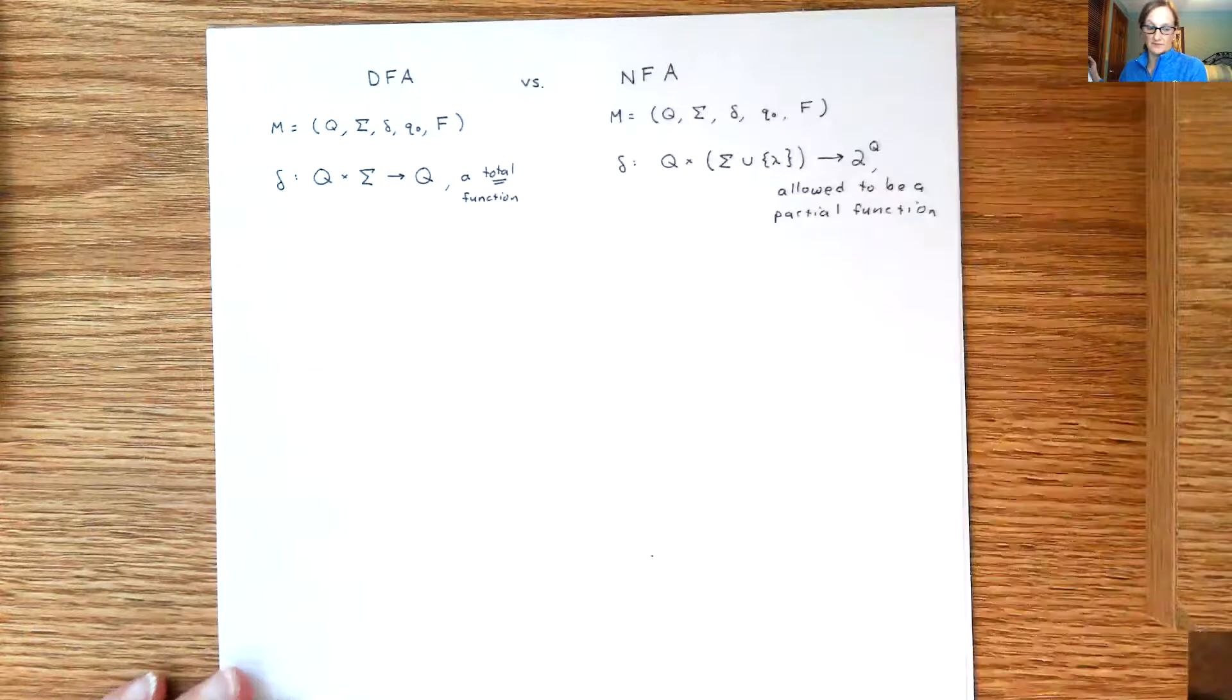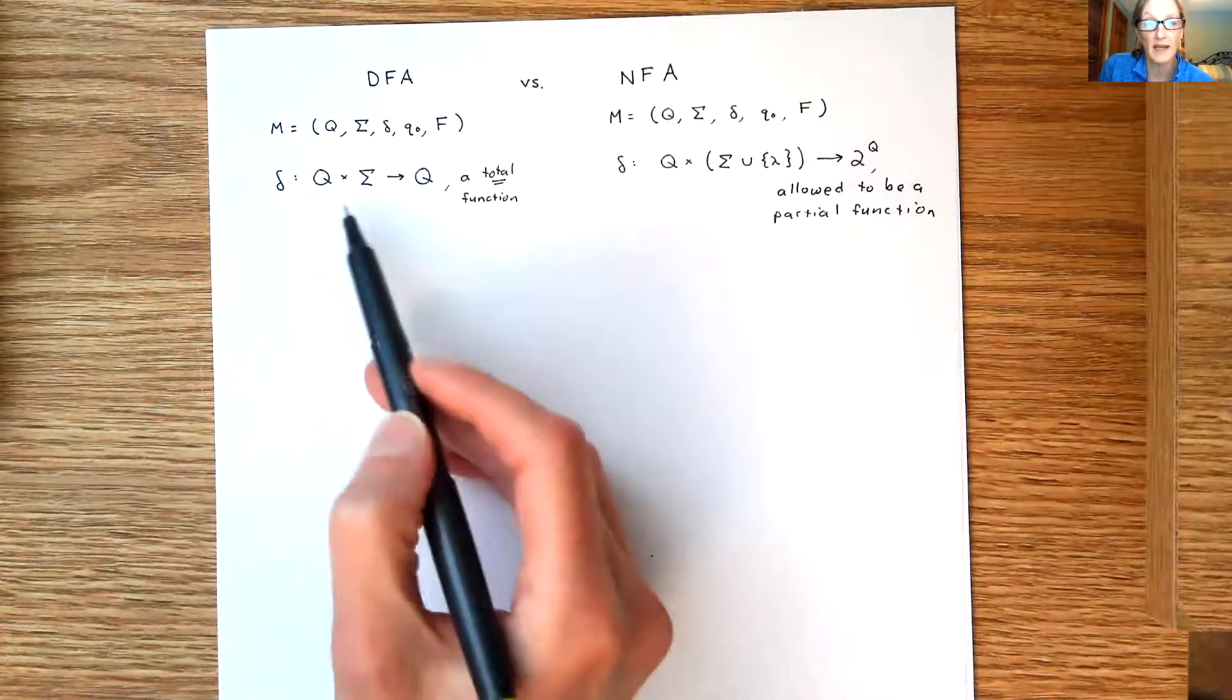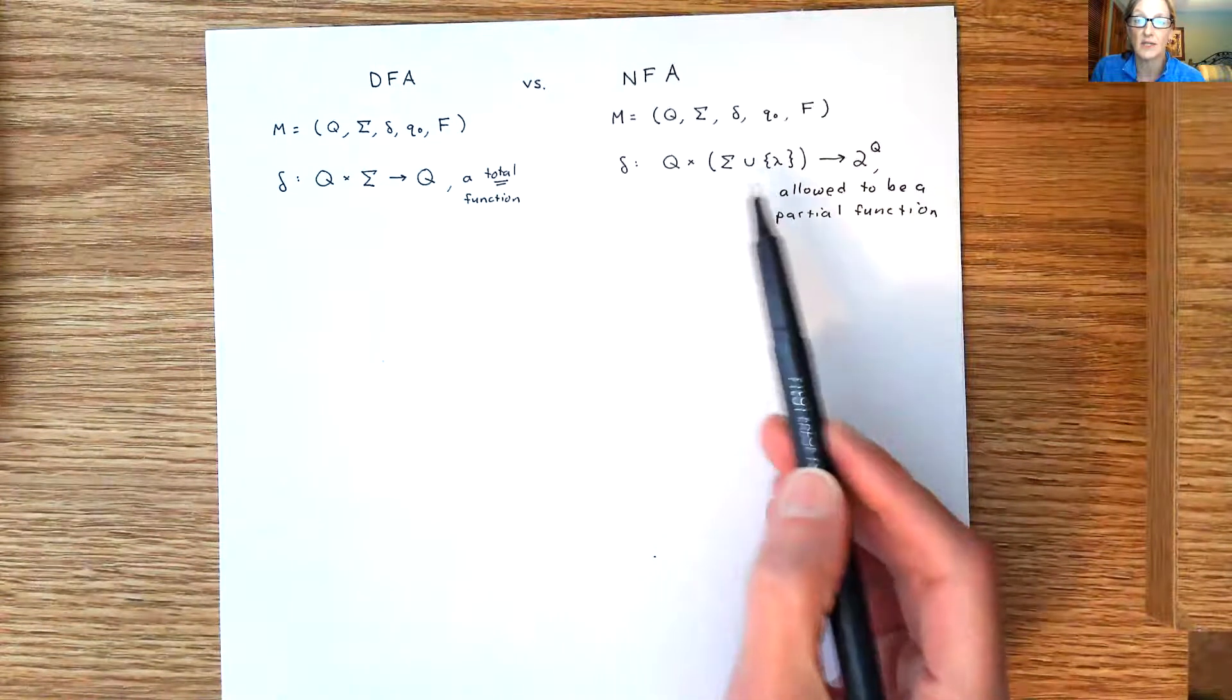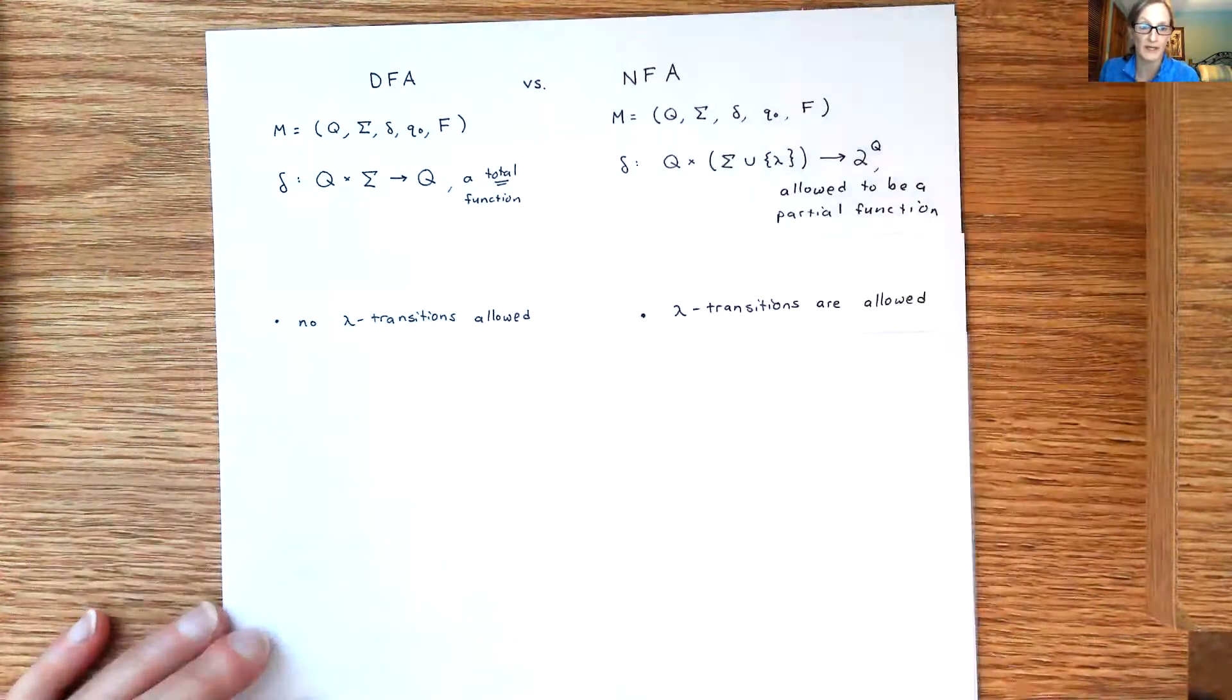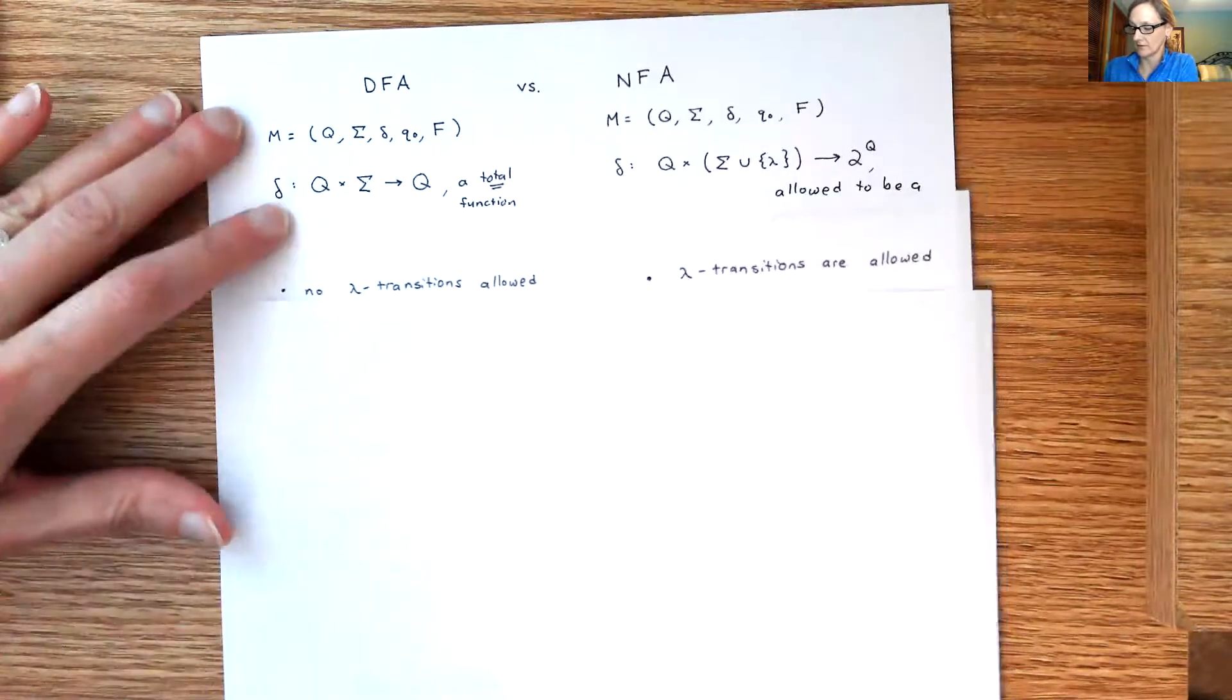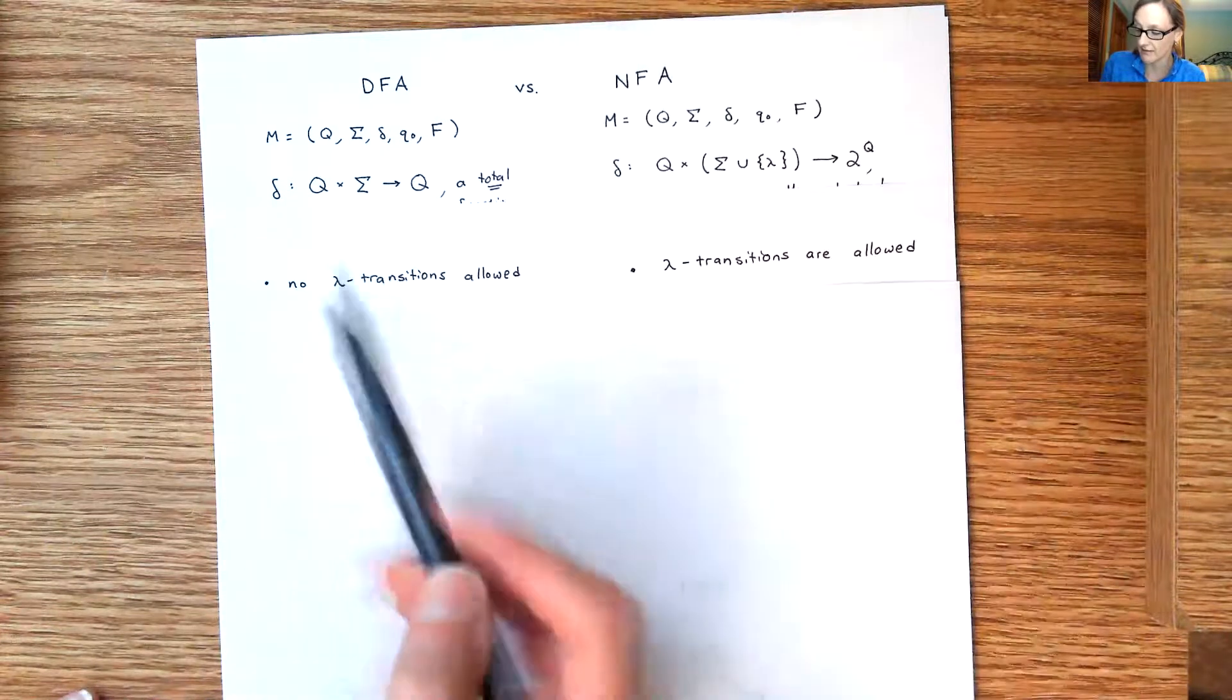So that's our definition. From that definition, here's what we know. The very first thing you'll notice is in the domain here Q cross Sigma versus in the domain for an NFA Q cross Sigma union lambda. So here's what's really important from that first point: for a DFA no lambda transitions are allowed.